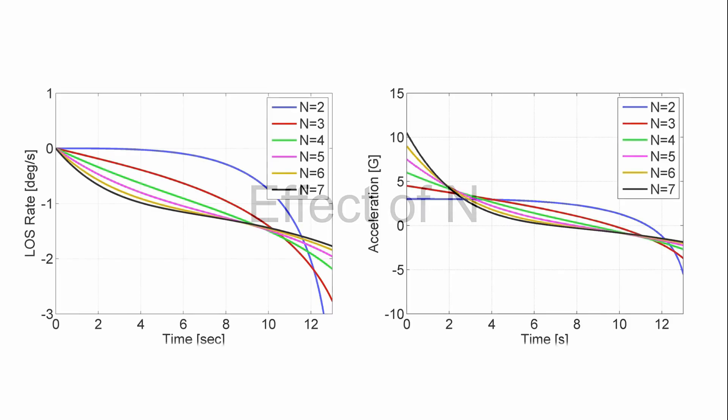Let's explore the effect of navigation gain in augmented proportional navigation. Initially, the line of sight rate is zero, leaving just the augmented term, that is, n times at over 2. So as n increases, we have an increasing initial acceleration command from APN.